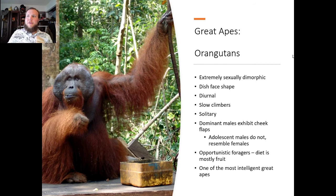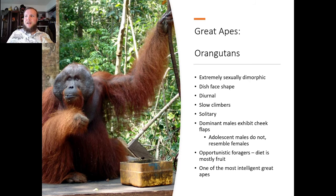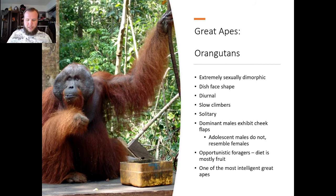Great apes: first, orangutans are extremely sexually dimorphic. Alpha males have flanges on their face, shown here, indicating he is the dominant male. Only dominant males have these flanges; females and adolescent males do not. They're diurnal, slow climbers, and primarily solitary. They're opportunistic foragers, but their diet is mostly fruit, and they're one of the most intelligent species of apes.